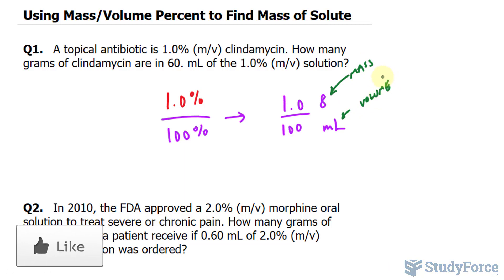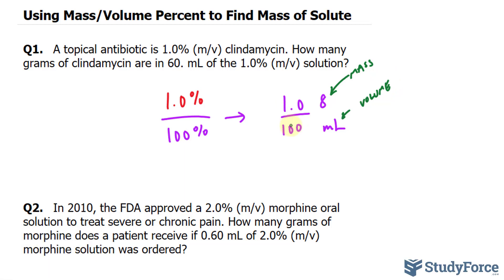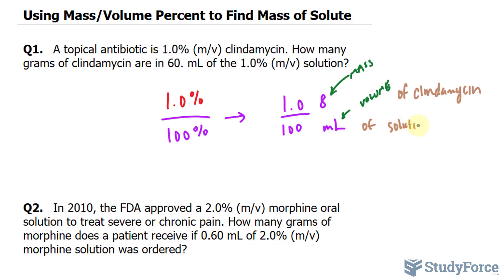To break this down further, I can say that there is 1.0 grams of clindamycin to 100 milliliters of solution. Now what they're asking is how much mass of clindamycin will there be if there's 60 milliliters of this solution?